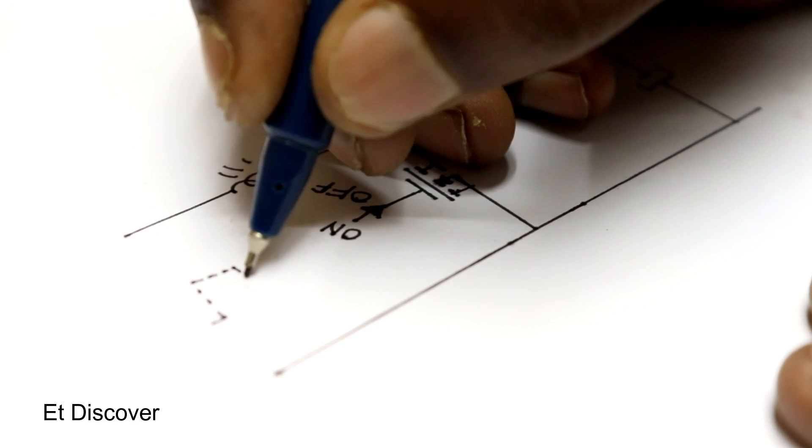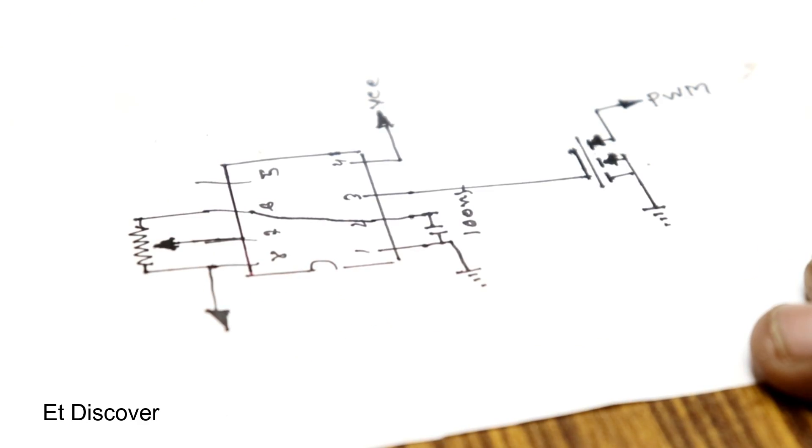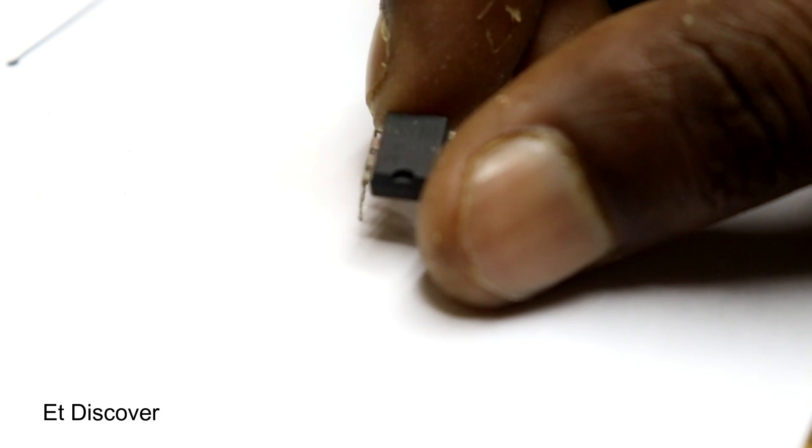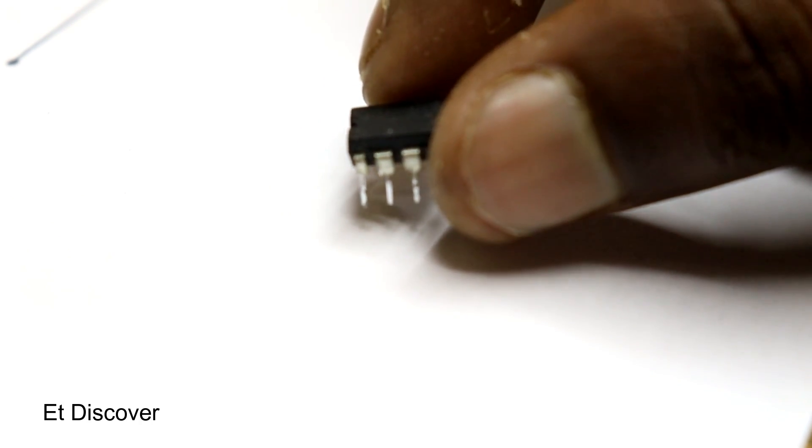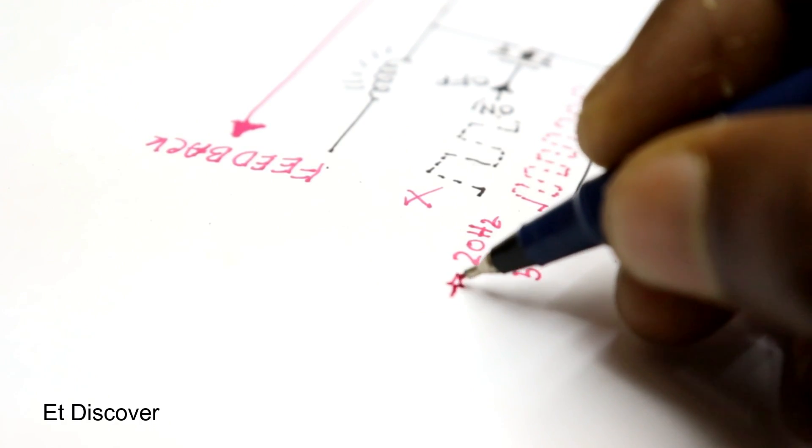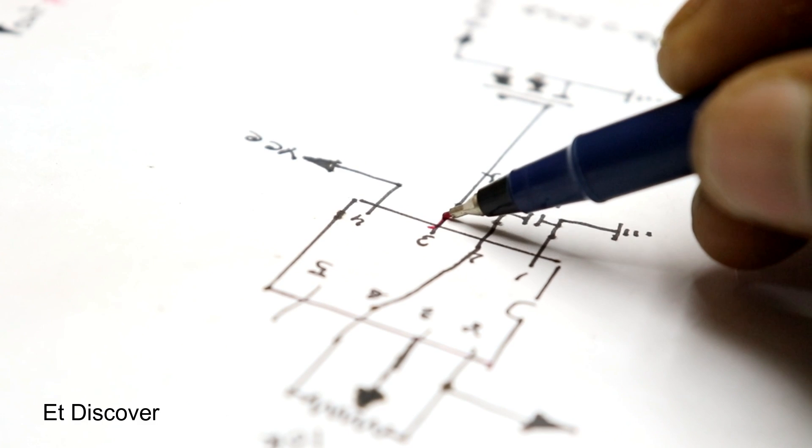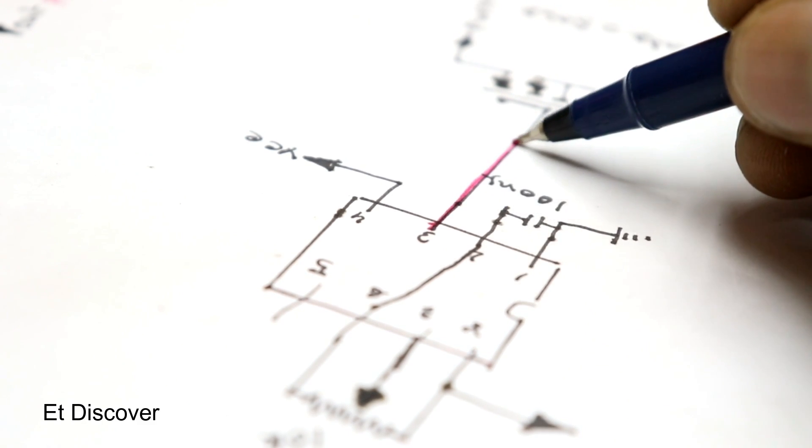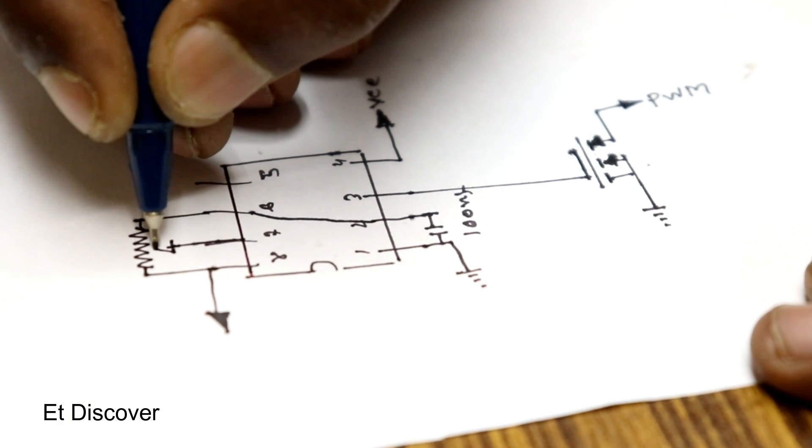Now I need a PWM signal creator. I made a diagram for PWM signal creator. 555 timer IC is good for it, which can create 2250 Hz signal that comes out from this 555 IC's pin number three. This depends on this 10k trimmer.